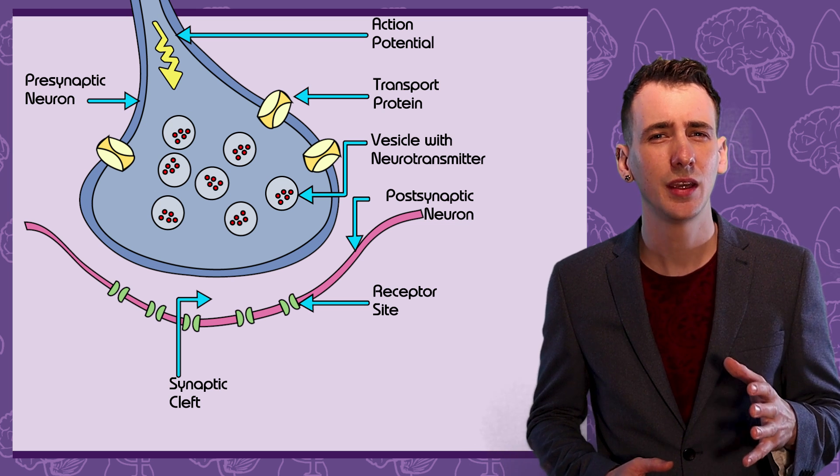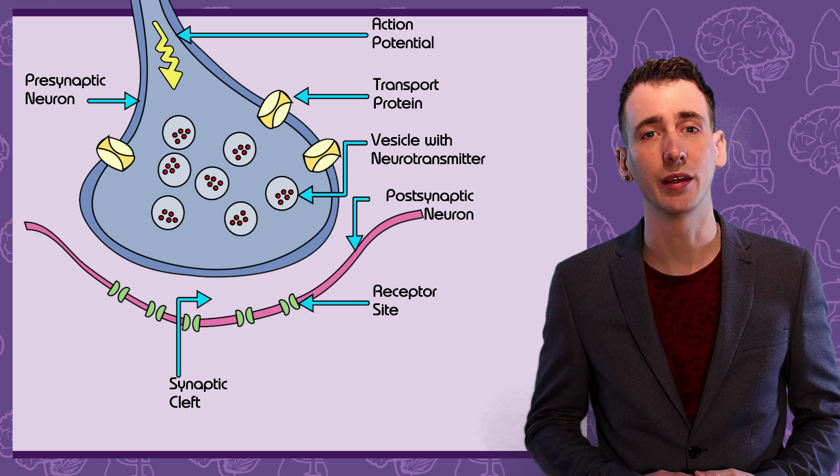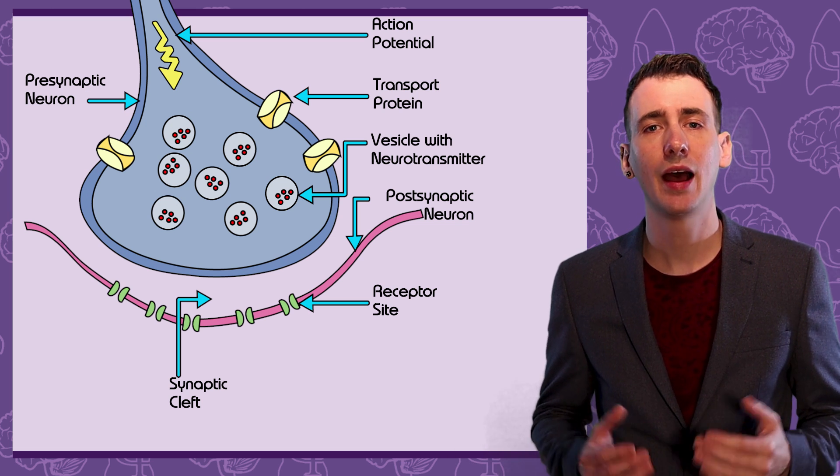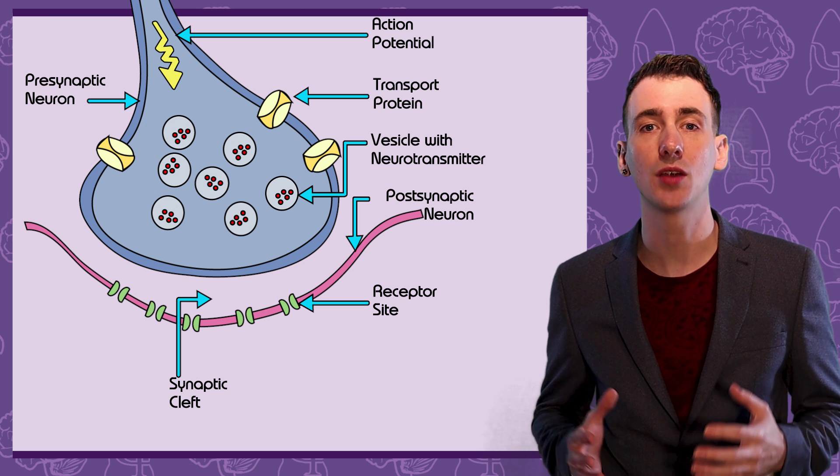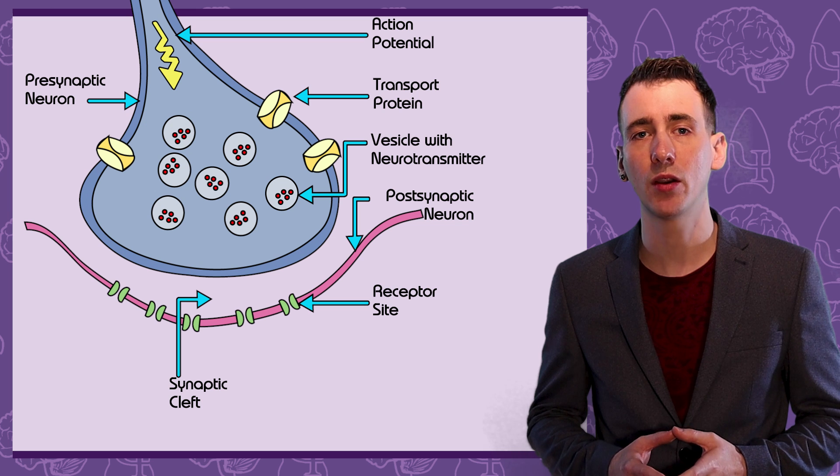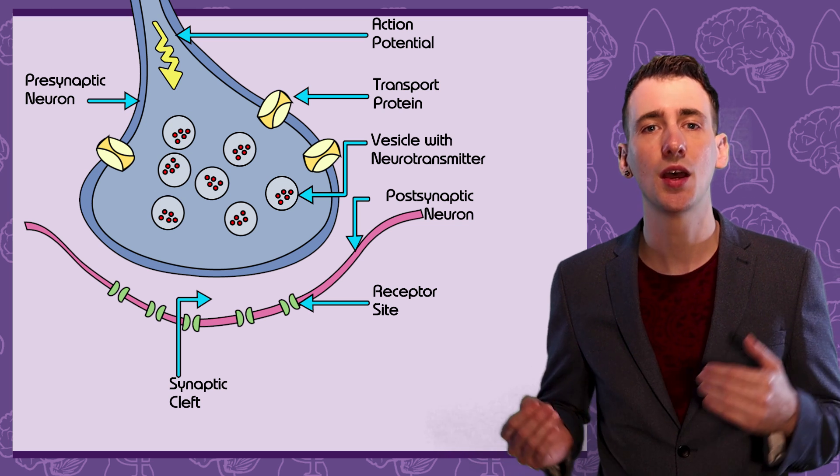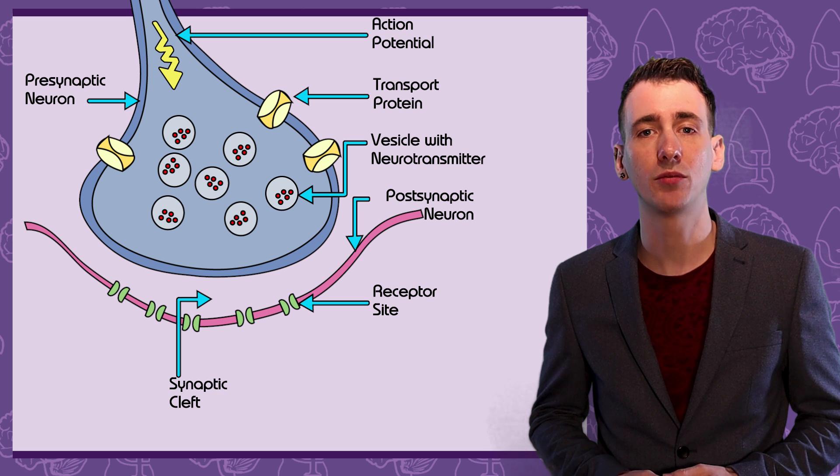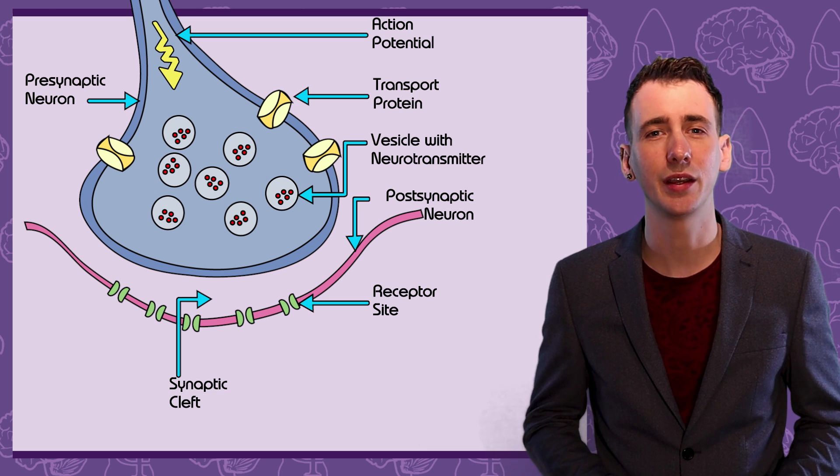To give you an idea how thin that is, it's about two and a half thousand times thinner than a sheet of paper. The membrane of the postsynaptic neuron has receptors for detecting the presence of neurotransmitters. The membrane of the presynaptic neuron has transport proteins that take neurotransmitters back into the cell. Make sure you can label this diagram from memory, as it's a common question in examinations.